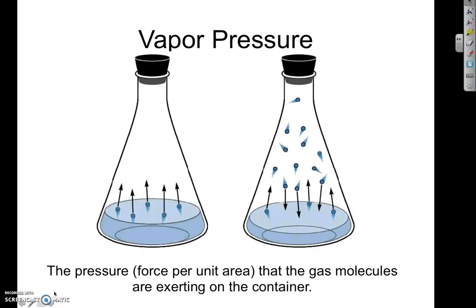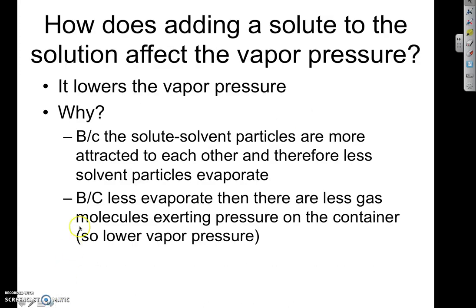What is vapor pressure? Vapor pressure is the pressure that gas molecules over a solution or solvent exert when they evaporate. They bounce around, hitting the sides of the container, and all those little gas molecules exert a force over a certain area — that is called pressure. So the pressure that gas molecules above the solution exert is the vapor pressure.